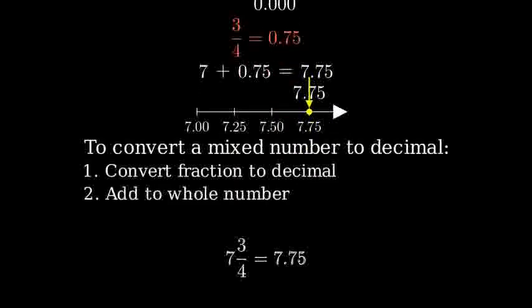So 7 and 3 quarters as a decimal is 7.75. Remember, to convert a mixed number to a decimal, first convert the fraction to a decimal, then add it to the whole number.